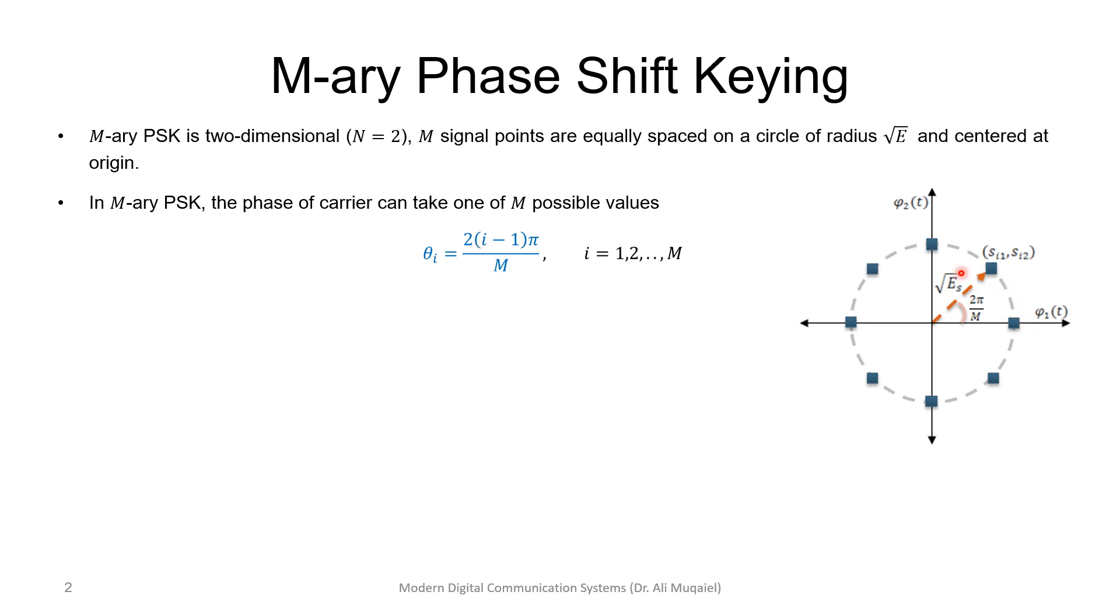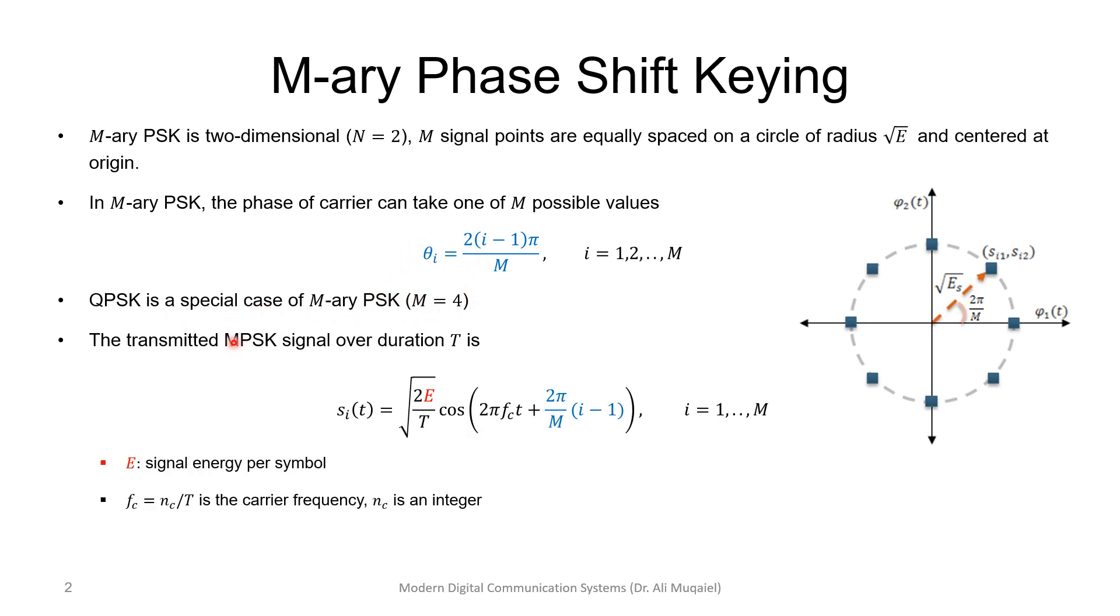In M-ary PSK, the phase of the carrier can take one out of capital M samples. Two pi is divided by M. We have a circle which is two pi, and we divide it by M to have M symbols. This is just a counter. For example, when i equals one, this would be zero, and we'll start with angle zero, and so on. If you look at QPSK or Binary Phase Shift Keying, it should be just a direct example of what we are doing here—it's just a special case.